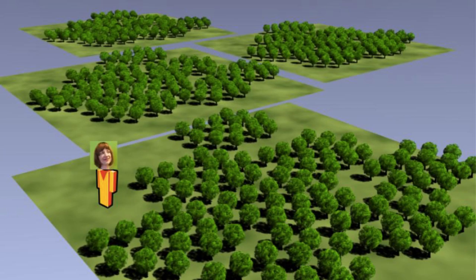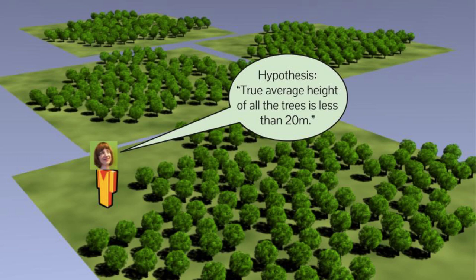So I might be standing in that clearing and utter some preposterous garbage like the true average height of all the trees is less than 20 meters. That happens to be false. I don't know it though because I haven't measured any trees. I'm allowed to have a hypothesis like this.